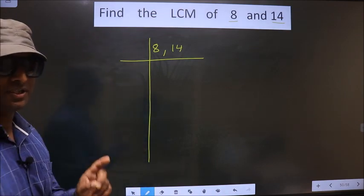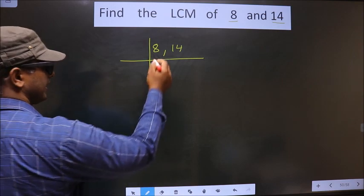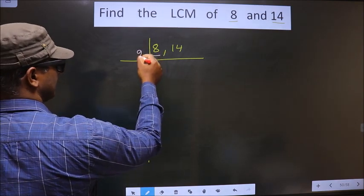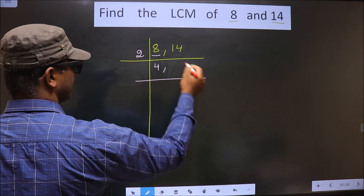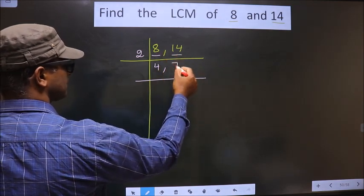This is your step 1. Next, here we have 8. 8 is nothing but 2 4s 8. Here we have 14. When do we get 14 in 2 table? 2 7s 14.